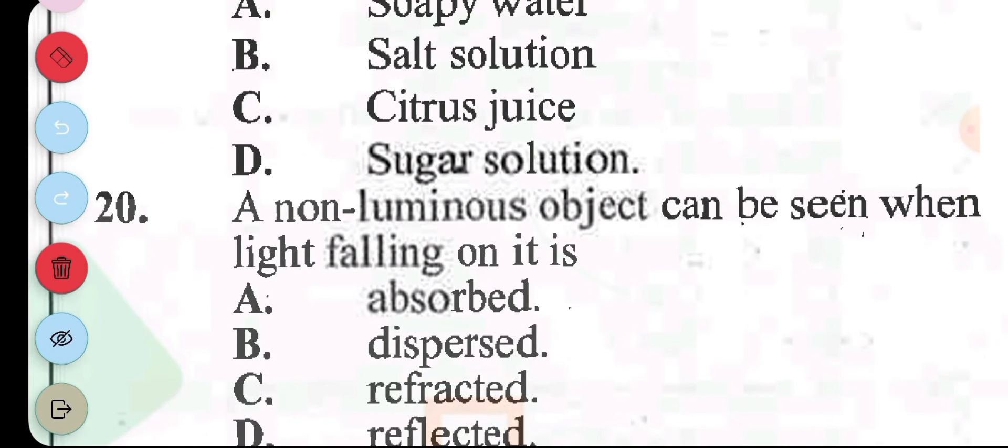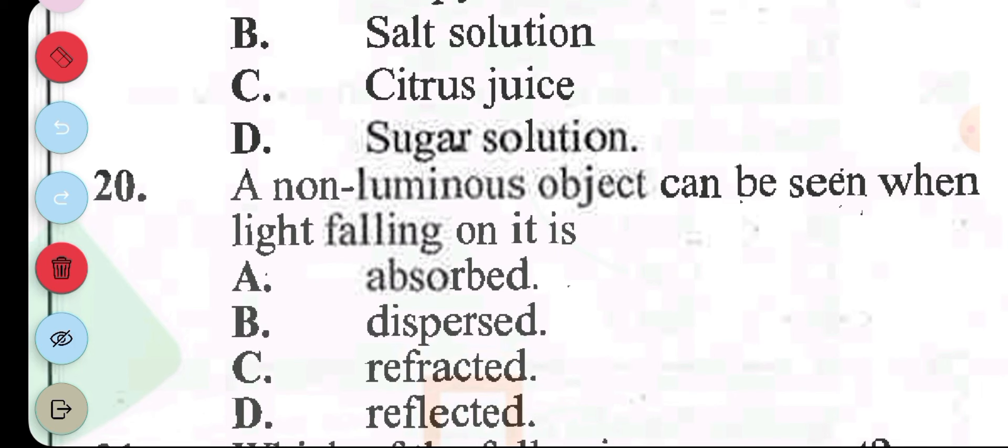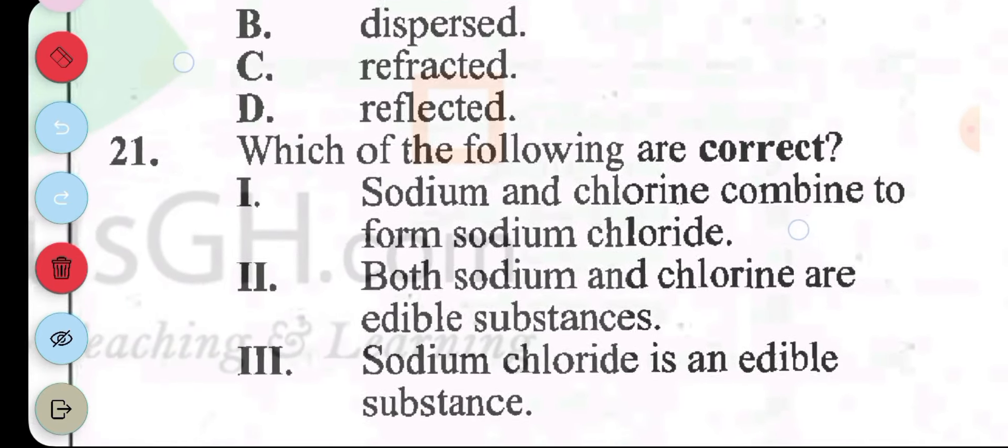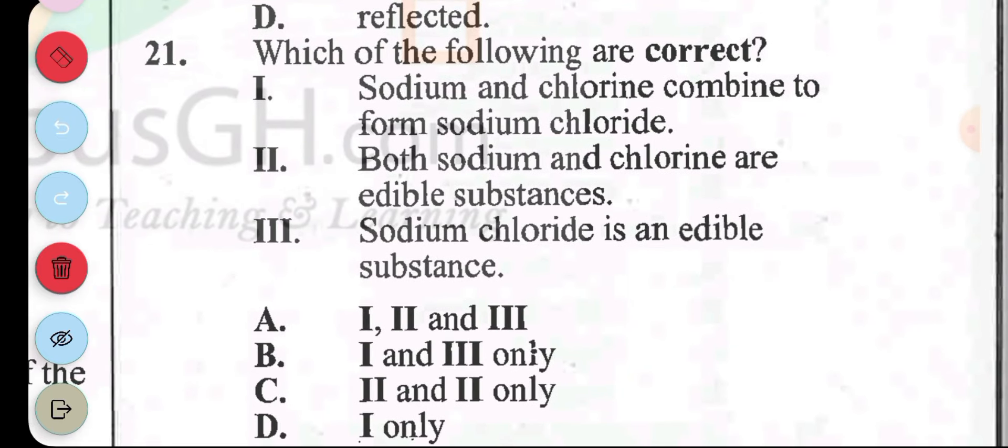Question 20: a non-luminous object can be seen when light falling on it is A, absorbed. B, dispersed. C, refracted. D, reflected. The answer to question 20 is D, reflected. Question 21: which of the following are correct? A, sodium and chlorine combine to form sodium chloride, correct. B, both sodium and chlorine are edible substances, no, they are actually poisonous. C, sodium chloride is an edible substance, very true. So even though sodium alone is not edible, chlorine alone is not edible, sodium chloride when combined is what gives flavor to the food we take in. The answer to this is B, I and III.